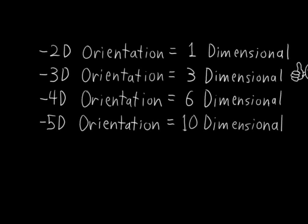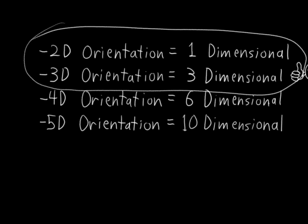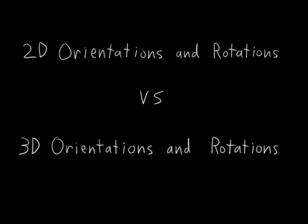Anyway, all of this is beside the point. The only thing we care about here is that orientations in 2D space are one-dimensional, and orientations in 3D space are more than one-dimensional. But why does it matter that 2D orientations are one-dimensional and 3D orientations are not? The reason it matters is because of how it impacts 2D and 3D rotations.